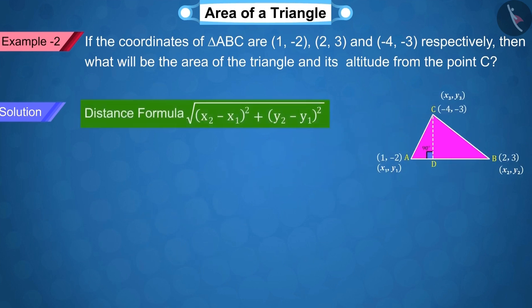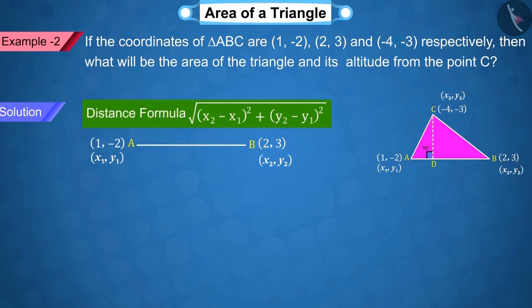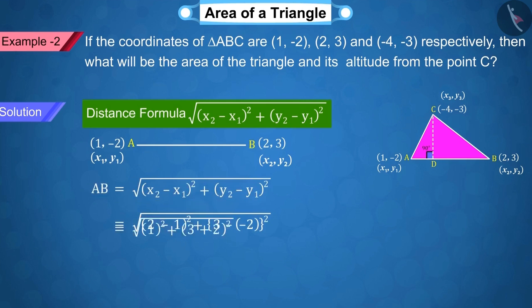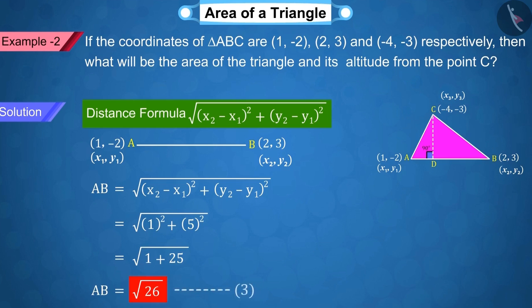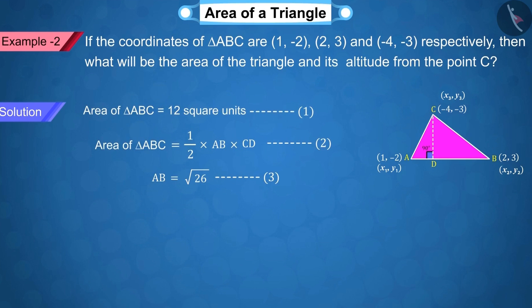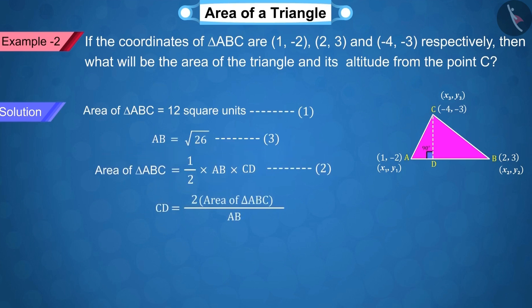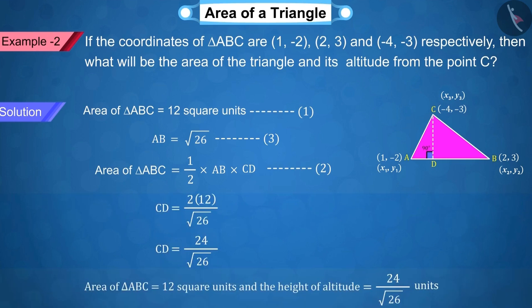With the help of the distance formula, the value of AB is obtained as √26 which is represented by equation 3. Because we have to find the altitude, we rewrite equation 2 and substitute the values of equations 1 and 3 in it from which the height of the altitude from the point C is obtained as 24/√26 units.